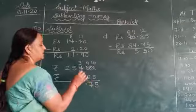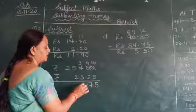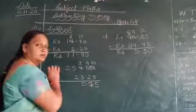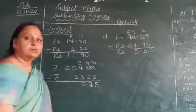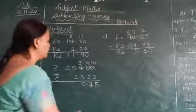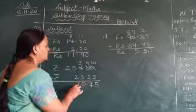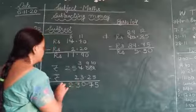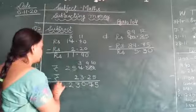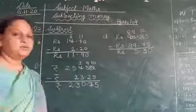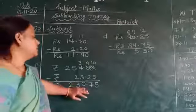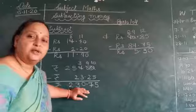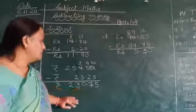When we minus 5 from 10, we will get 5. When we minus 2 from 9, we will get 7. We put the decimal point here. 3 minus 3 when we subtract, same number gives 0. And 5 minus 2 gives us 3. So the answer is rupees 230.75.